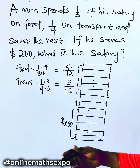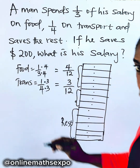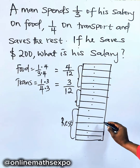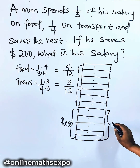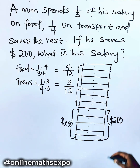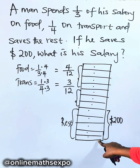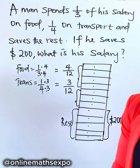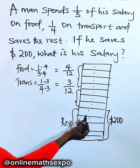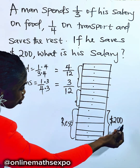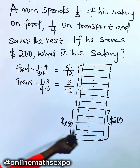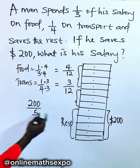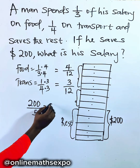The question says that if he saves $200, that means the rest — those 5 bars — equal $200. So from this point to this point is $200. If 5 bars give you $200, to find the value of each bar you divide $200 by 5, which gives you $40.